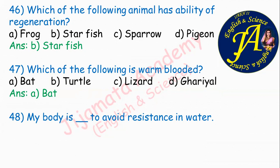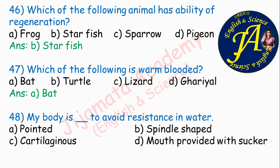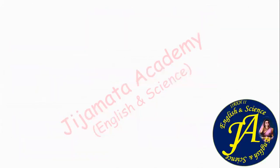My body is dash to avoid resistance in water — a question about Pisces. Options are pointed, spindle shaped, cartilaginous, mouth provided with sucker. Correct answer is option B: my body is spindle shaped to avoid resistance in water.